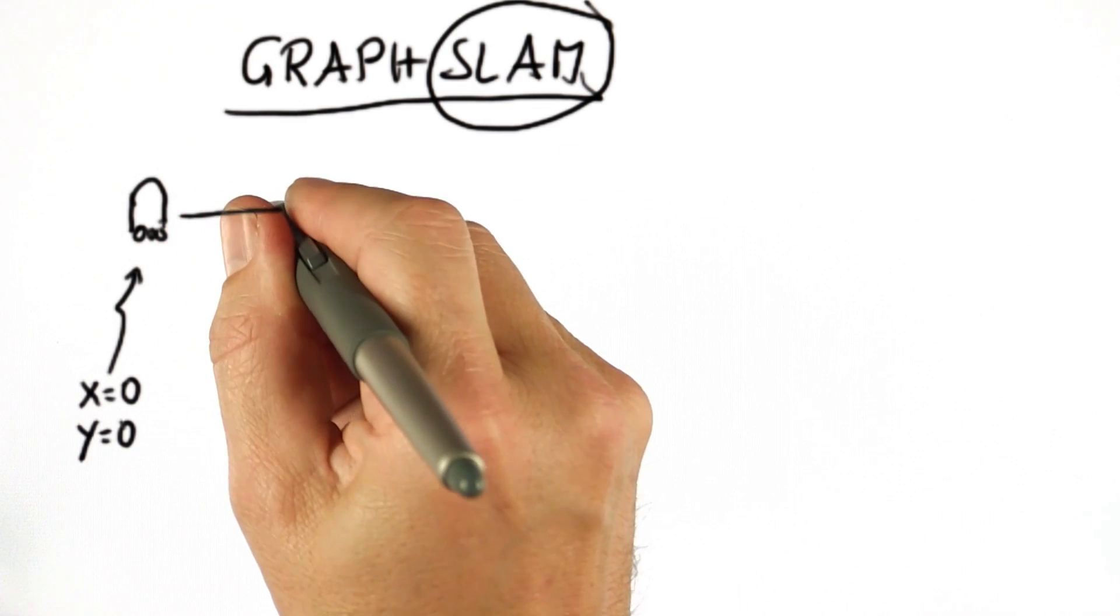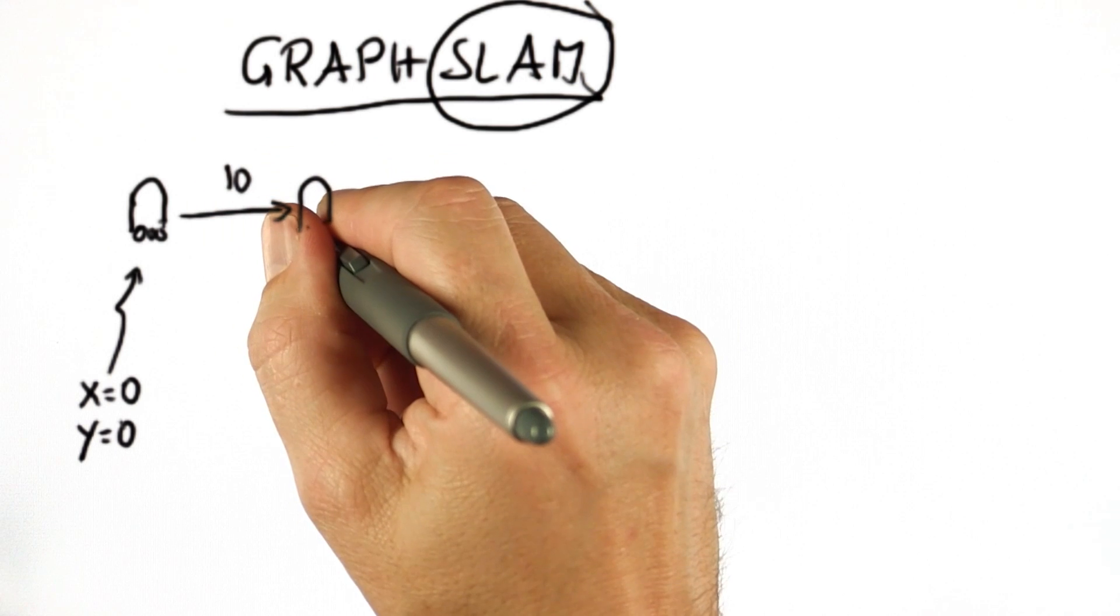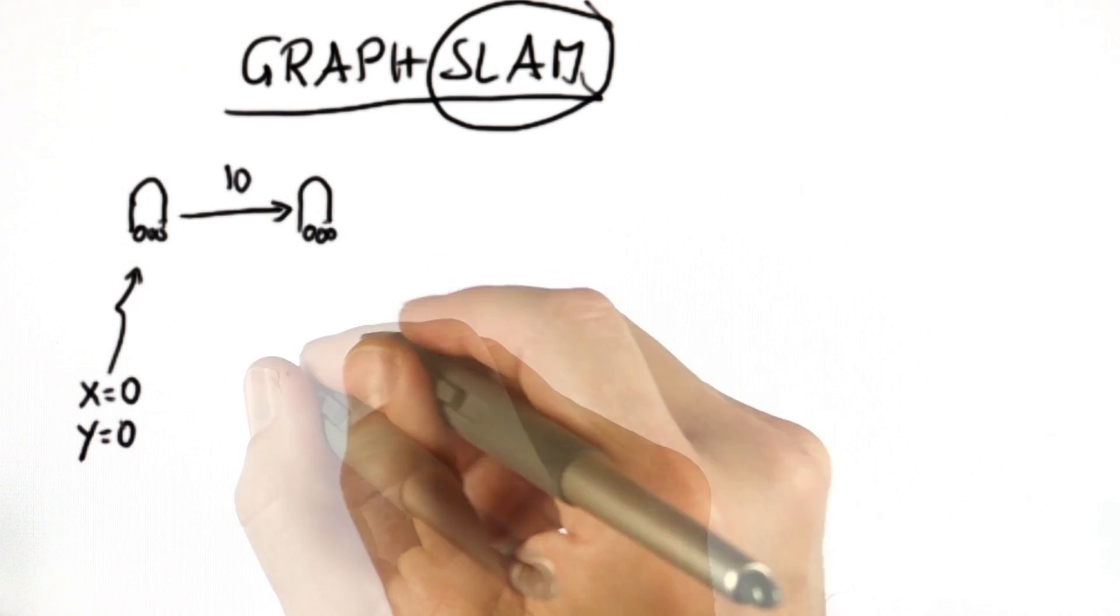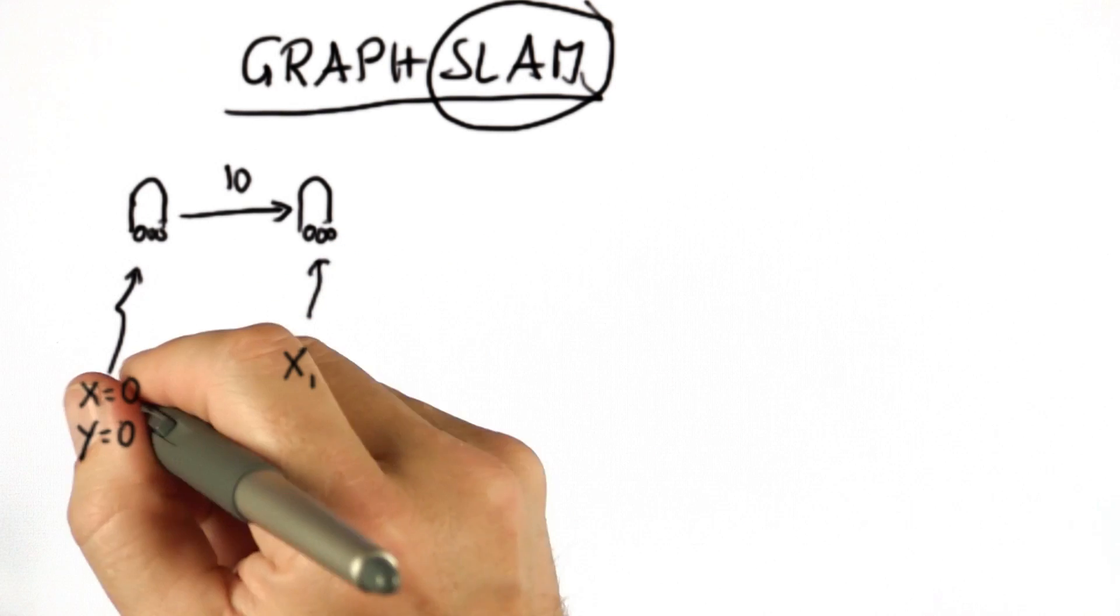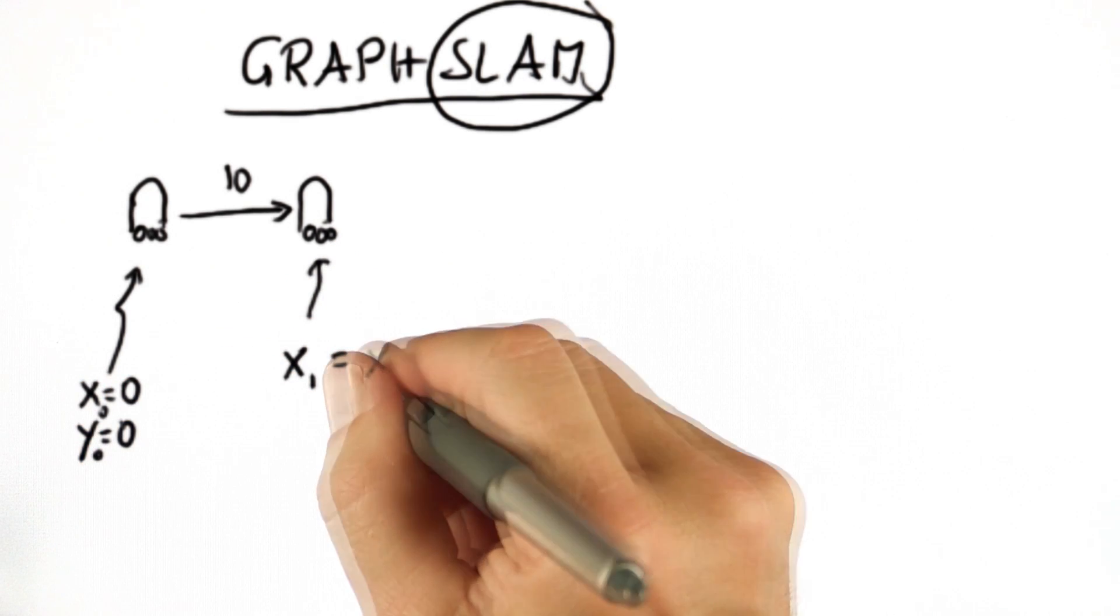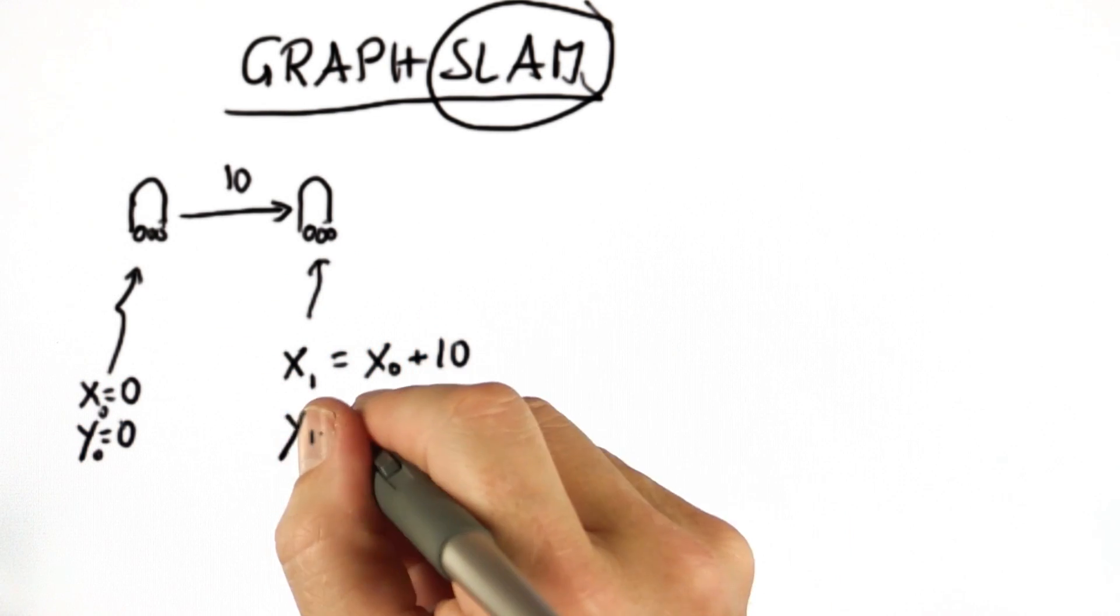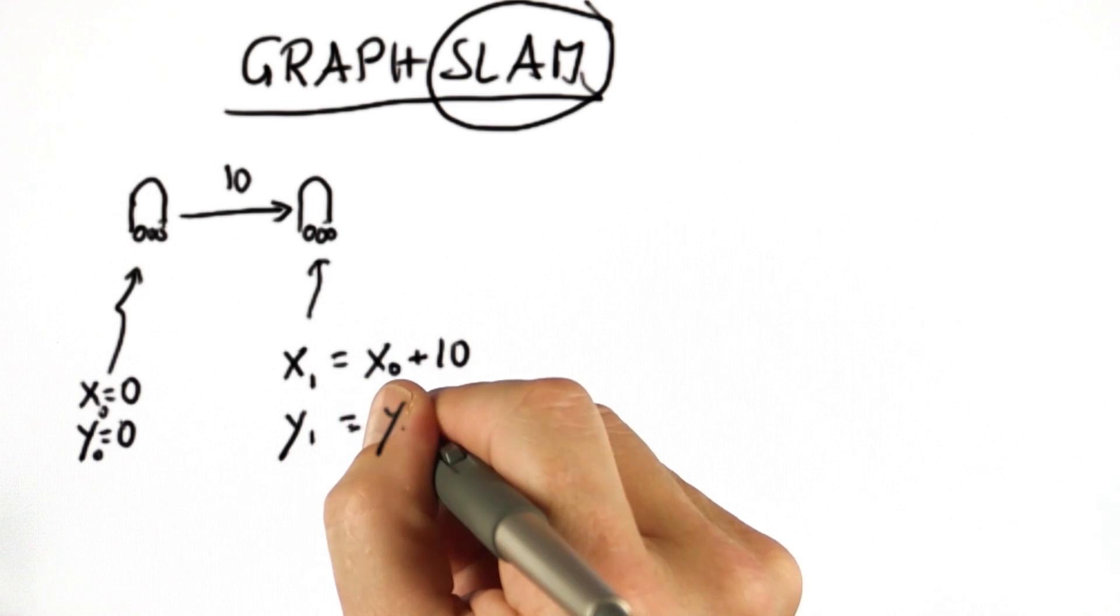And let's assume the robot moves to the right in x direction by 10. So it's now over here. In a perfect world, you would know that x1, the location after motion, is the same as x0 plus 10, and y1 is the same as y0.